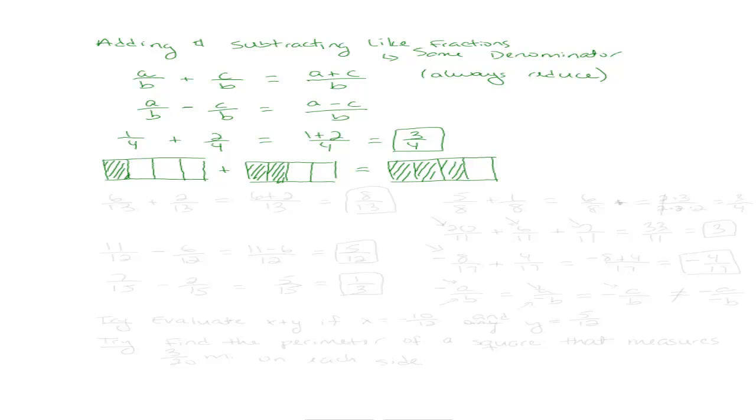So let's try a couple of other examples. So let's say we have 6 over 13 plus 2 over 13. Well, I'm just going to follow the rules that I just came up with, which are we're going to add together the numerators. So it's 6 plus 2. And we're going to keep the same denominator, which happens to be 13. All right, 6 plus 2 is 8 over 13.